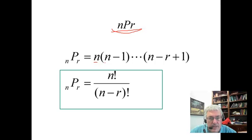So it is N times N minus one and goes out here so that you have basically like R different factors.